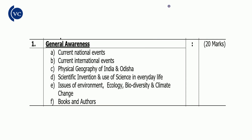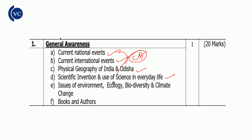The General Knowledge section covers current national events, current international events, physical geography of India and Odisha, scientific inventions and uses of science in everyday life. It also includes issues of environment, ecology, biodiversity, climate change, and books and authors. These topics together carry 20 marks.